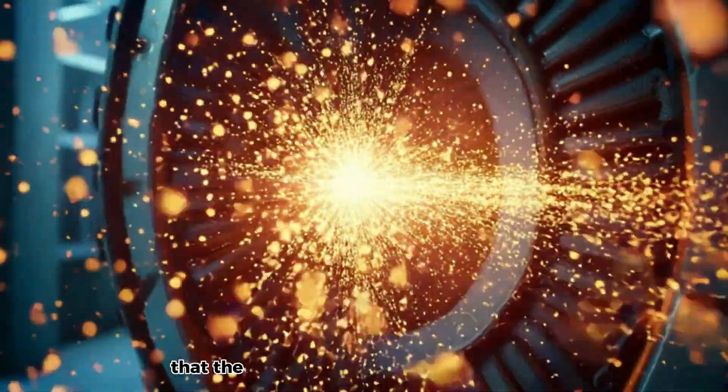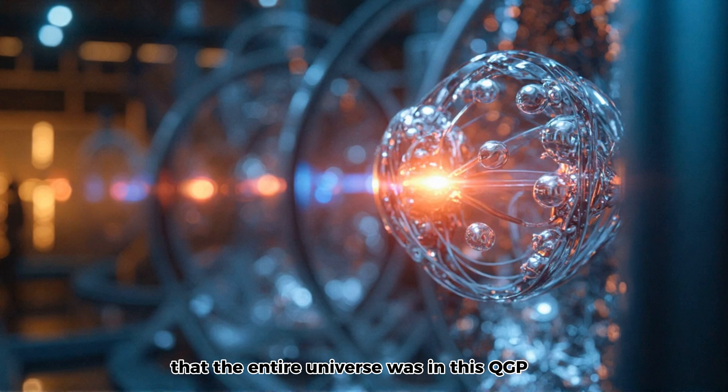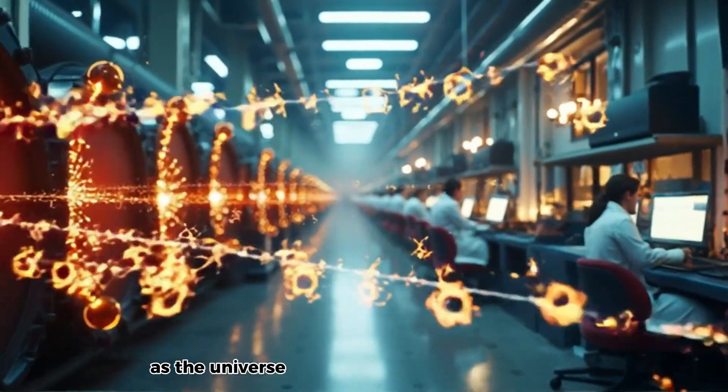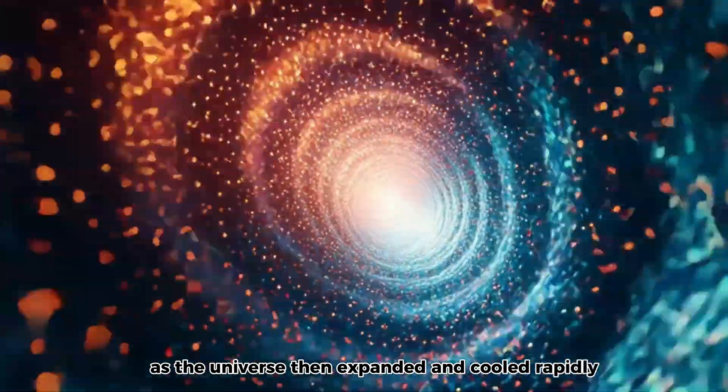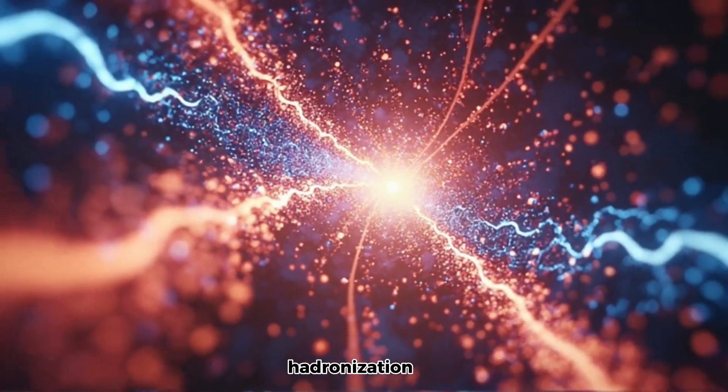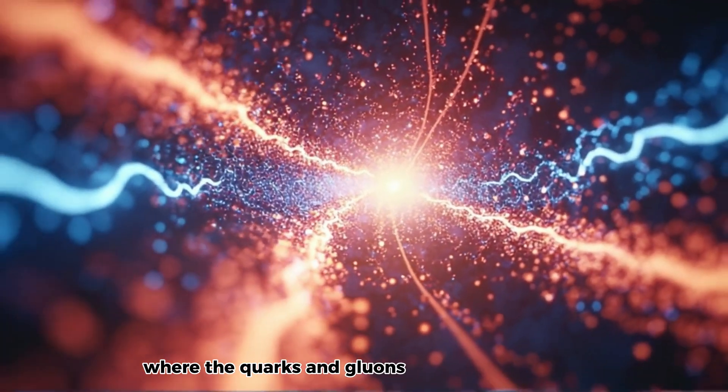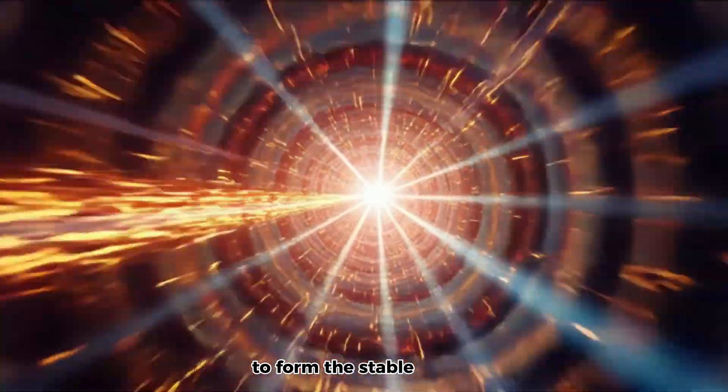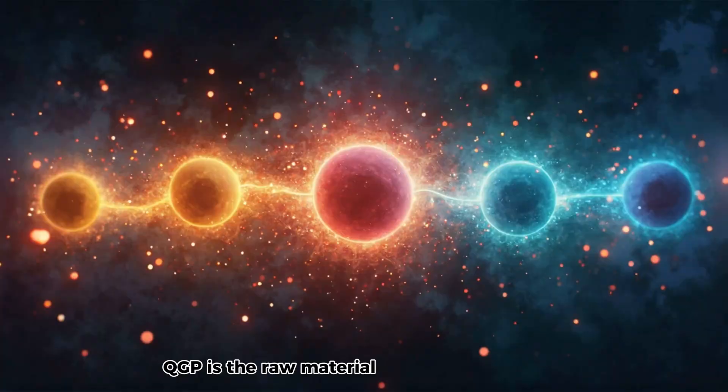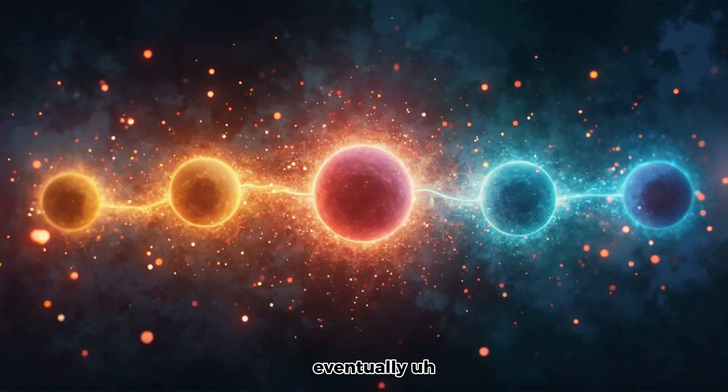And the theory is? The theory is that the entire universe was in this QGP state for about the first microsecond after the Big Bang. Just one microsecond. But a crucial one. As the universe then expanded and cooled rapidly, this QGP went through a phase transition. It's called hadronization. Hadronization. Yeah, where the quarks and gluons bound together again to form the stable particles, like protons and neutrons, that make up everything we see today.